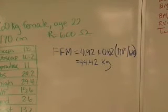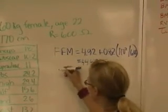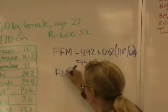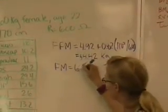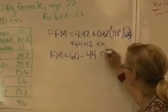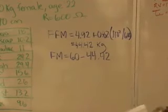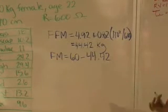So, to get percent body fat, we are going to take the fat mass divided by total body mass, but right here we have fat-free mass. So, her fat mass is equal to her total body mass, 60, minus the fat-free mass. So, your total body mass is your fat mass plus your fat-free mass.